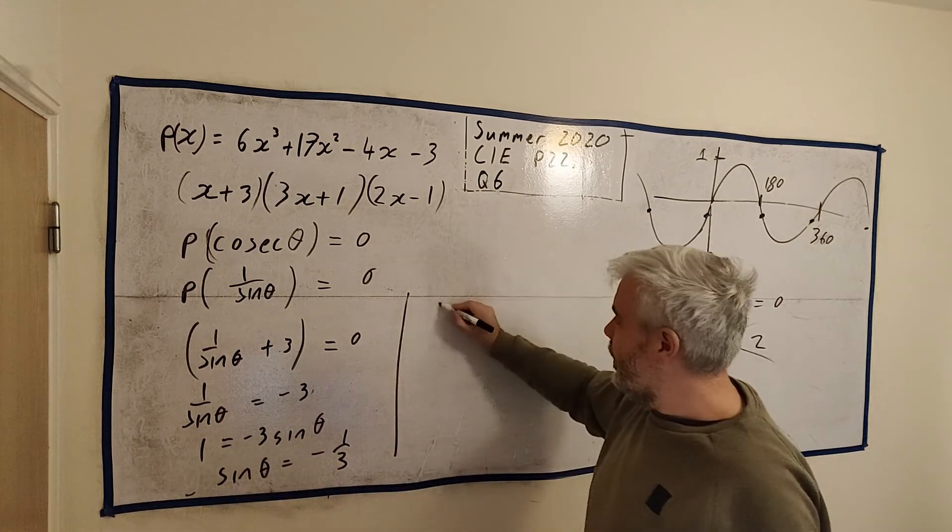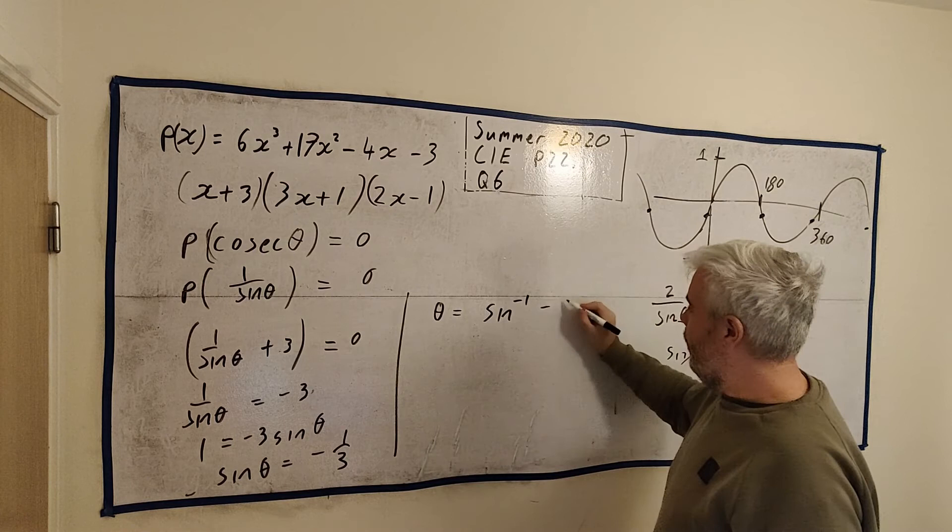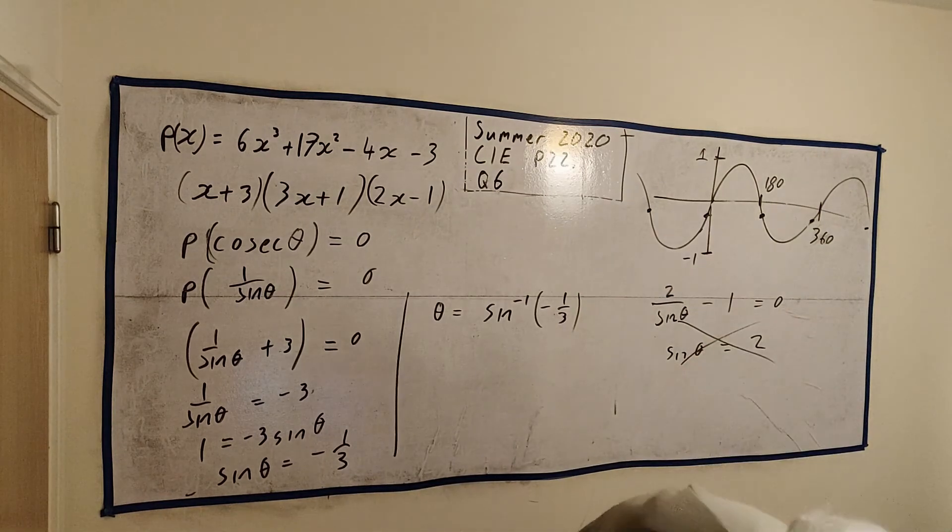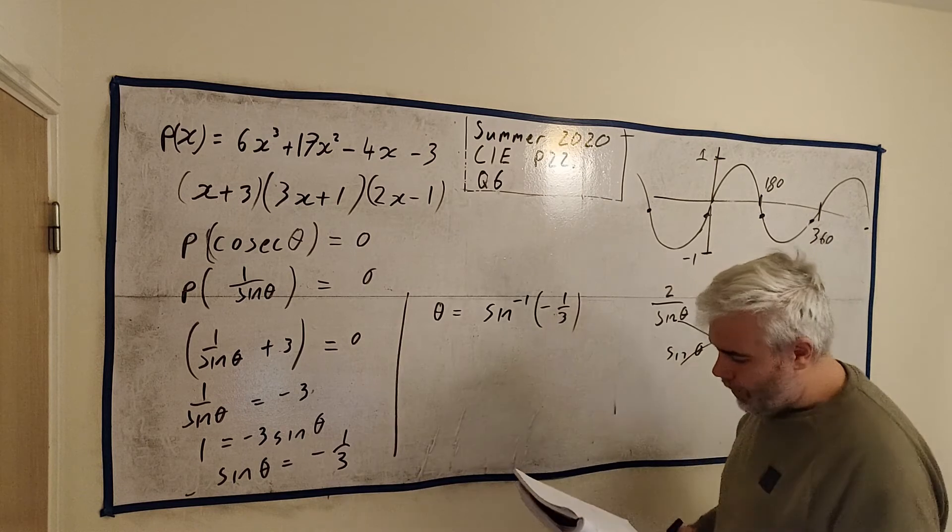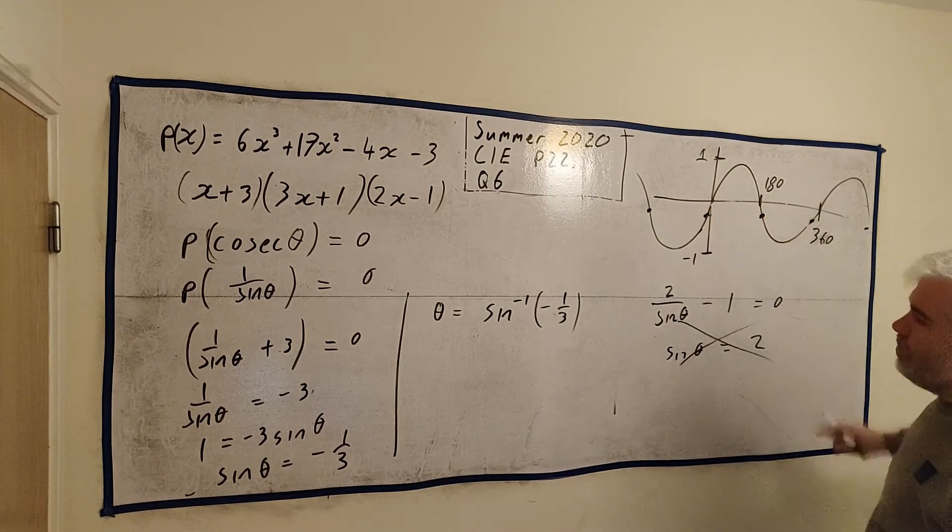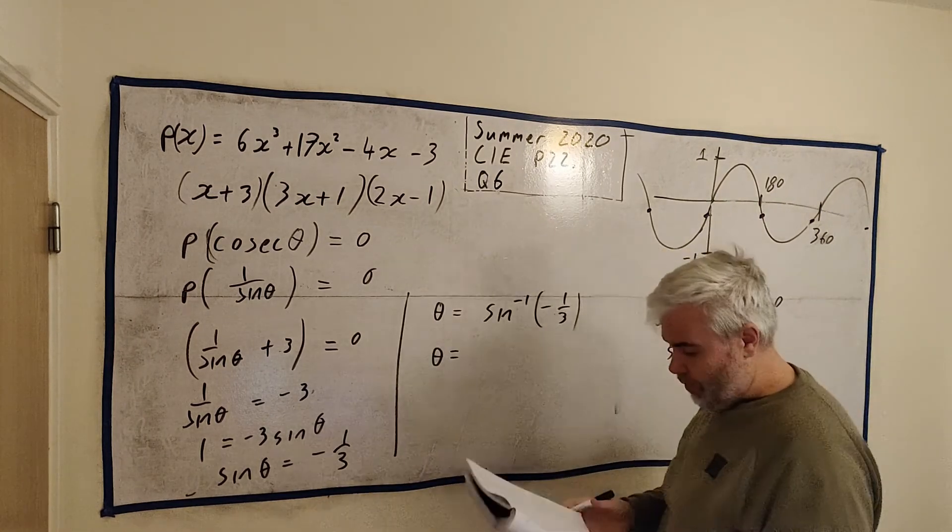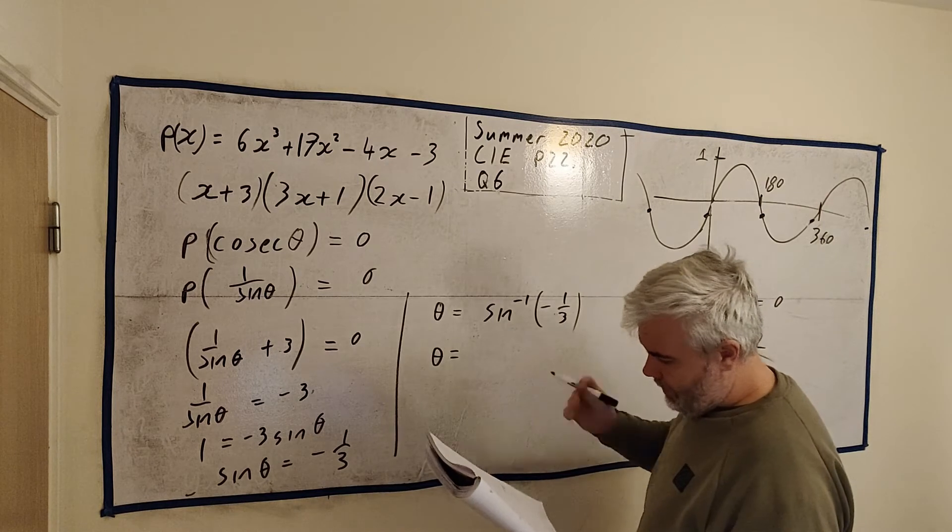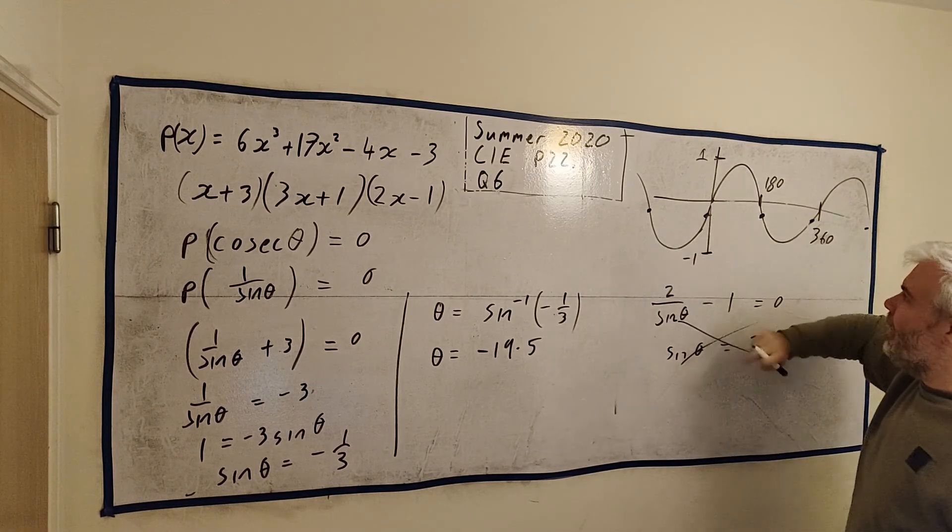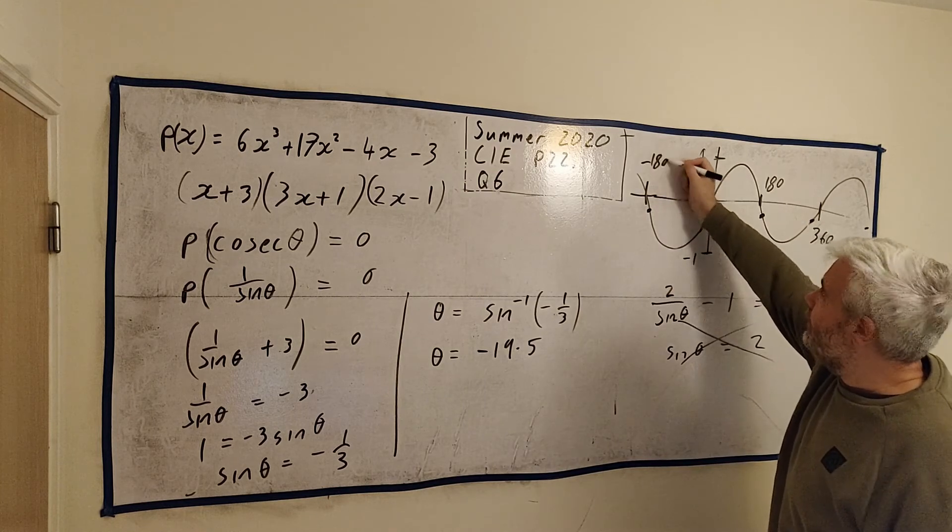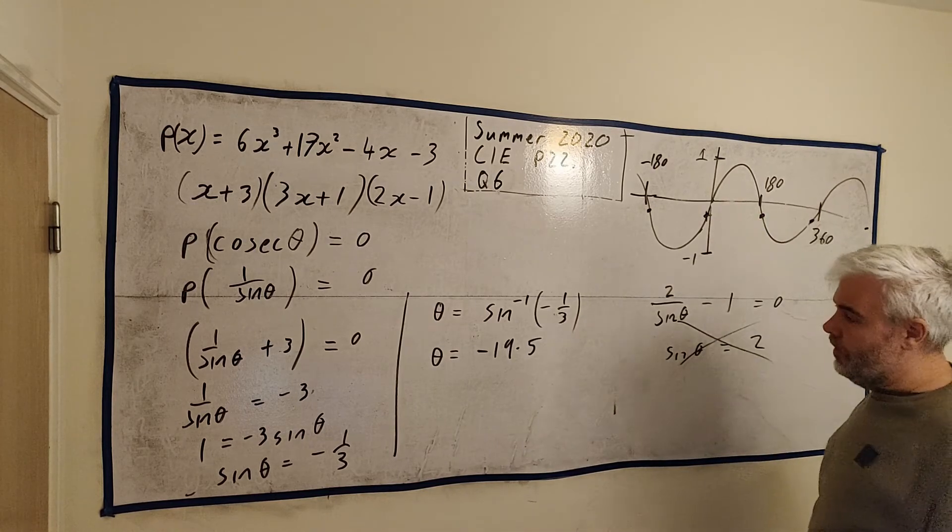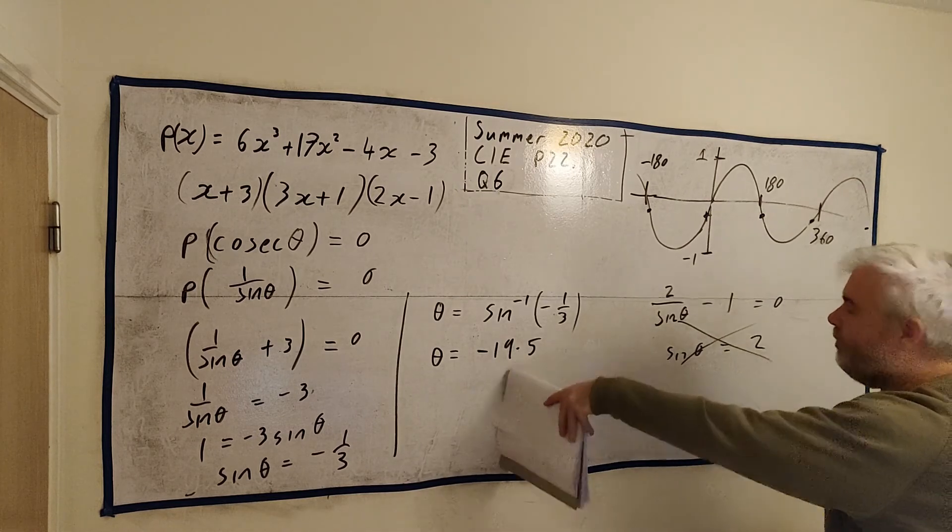Take the inverse sine of both sides. Theta is equal to the inverse sine of minus 1 over 3. Don't get too afraid by all these minuses. The calculator will take care of all of this. Now, I believe calculators will give you different answers. Some calculators will give you this as their first answer. Some calculators look for the first answer between 0 and 360. But my calculator will actually give you minus 19.5. So my calculator gives me this answer here. Because what my calculator does, it looks between minus 180 and plus 180 and gives me the first answer it finds. And this is the first answer it knows. So minus 19.5 is one answer.